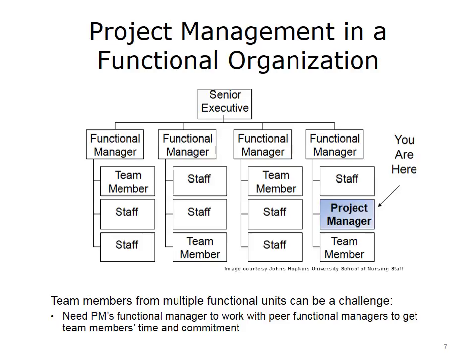As we look at project management in each of these three different organizational structures, the first is a functional organization. The diagram shows where you might appear as the project manager operating in a functionally organized organization. Questions you may have include whether the team members on your project are under your line management responsibility, or under your boss's line responsibility — meaning they don't report to you directly except on this specific project. Team members may also come from other functional areas, so it's important to appreciate the relationship your functional manager has with counterpart functional managers. You need to appreciate that your team members' loyalties exist both to your project and to their home functional unit.